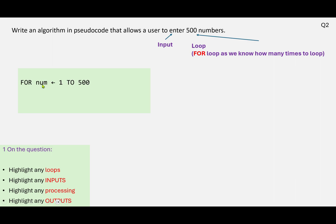So the for loop structure, we can write FOR num, that's going to be our loop variable, assign 1 TO 500. That's going to go around 500 times.